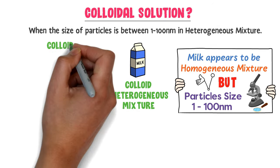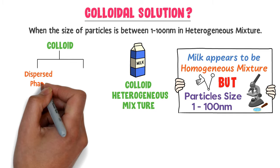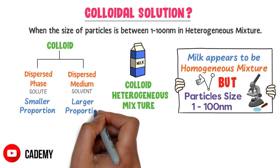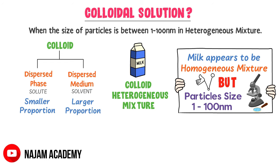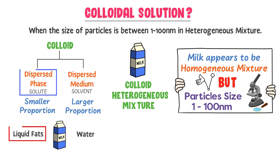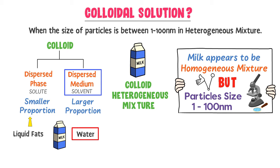Every colloid contains two phases: dispersed phase and dispersed medium. The dispersed phase is like a solute and the dispersed medium is like a solvent. Dispersed phase is the component present in smaller proportion, while dispersed medium is the component present in larger proportion. For example, in milk, liquid fat — being present in smaller proportion — is the dispersed phase, while water — being present in larger proportion — is the dispersed medium.